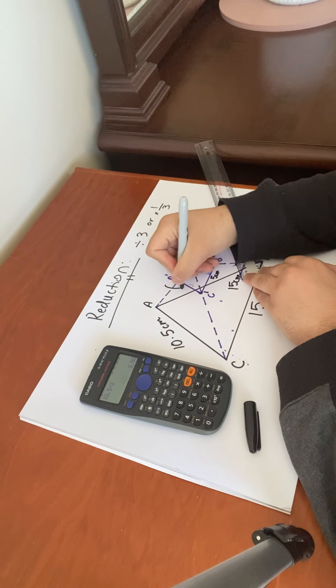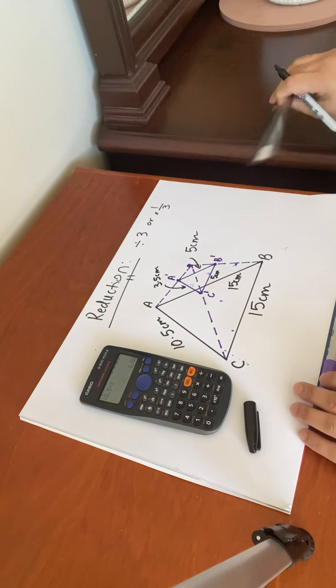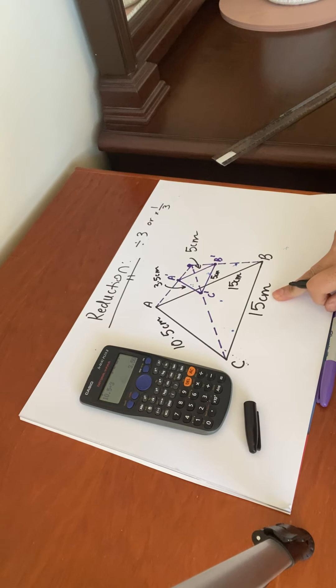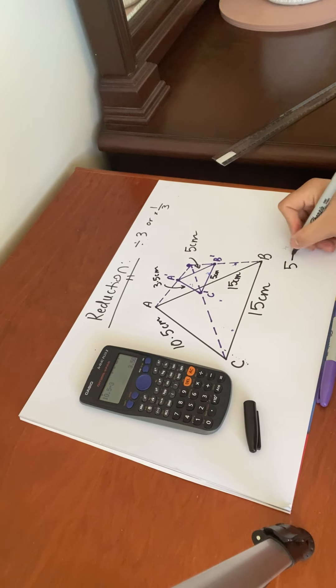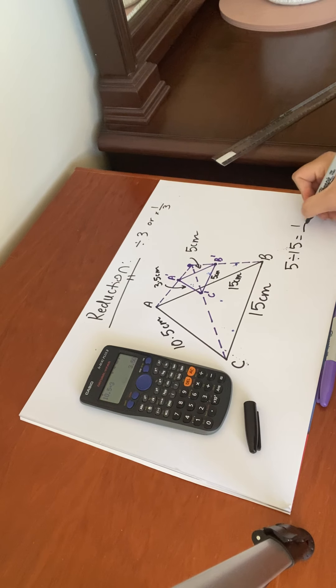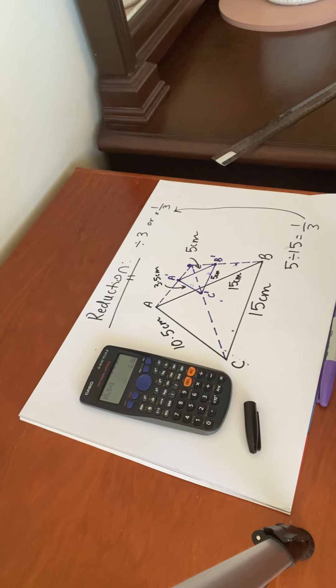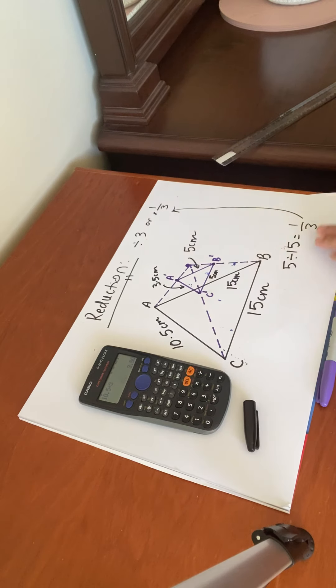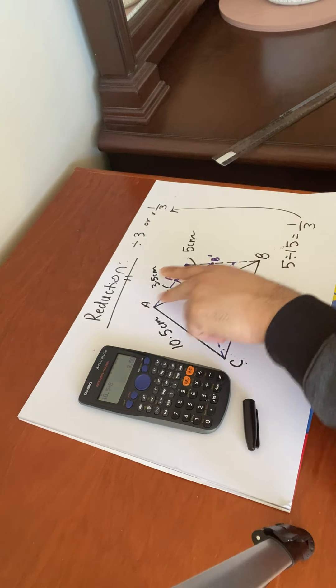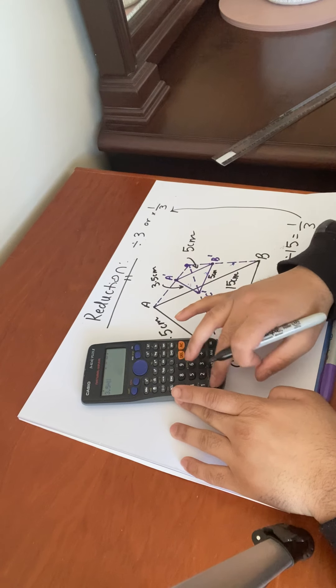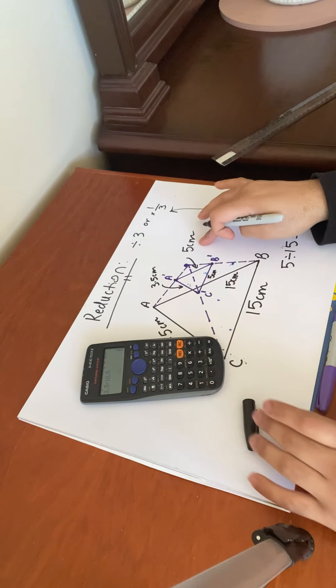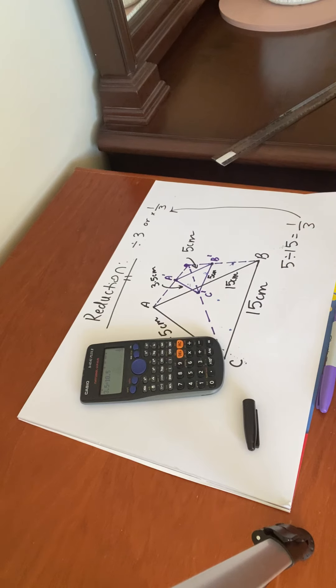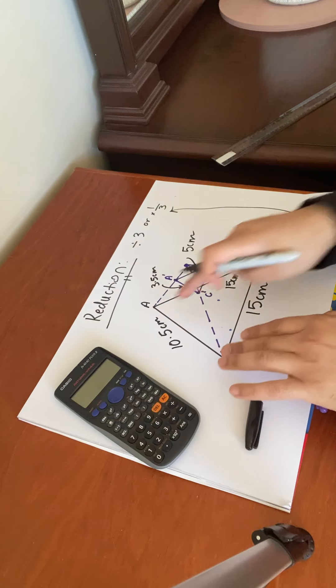And that image is 3.5 centimeters, that length of this, that image. Okay, all right. Five divided by 15, so we know we've done it correctly. So we know we've done it correctly if the ratio of the matching sides are all the same.